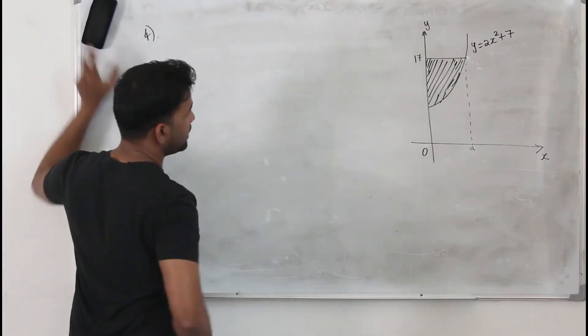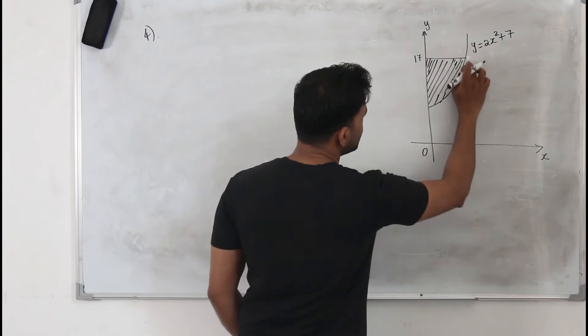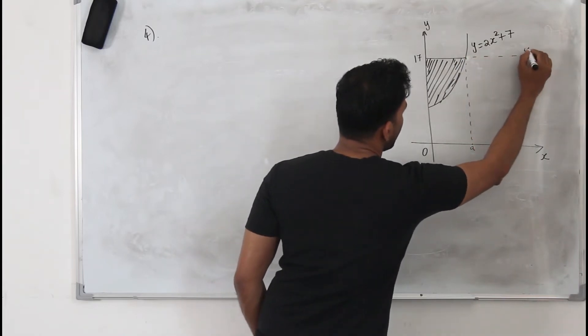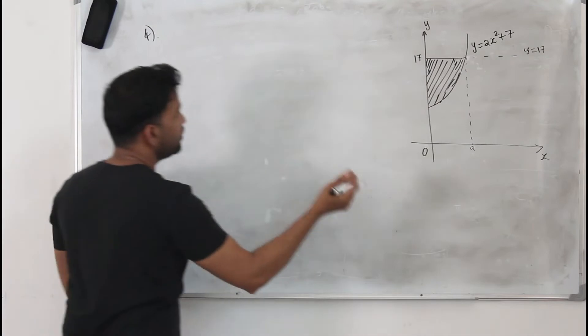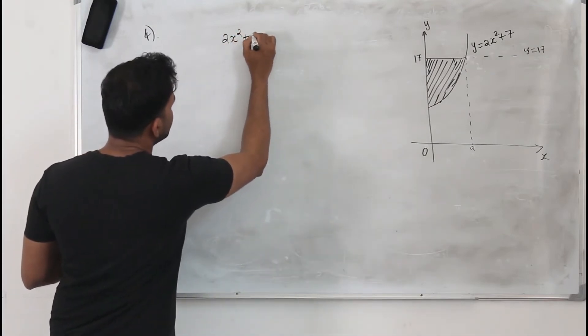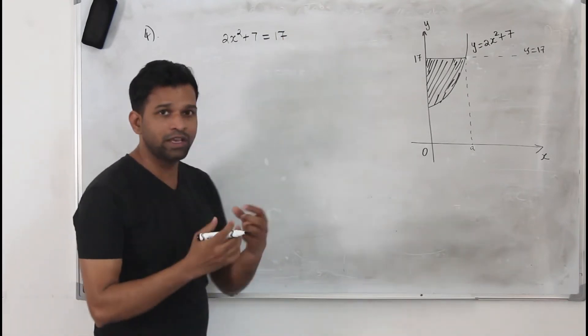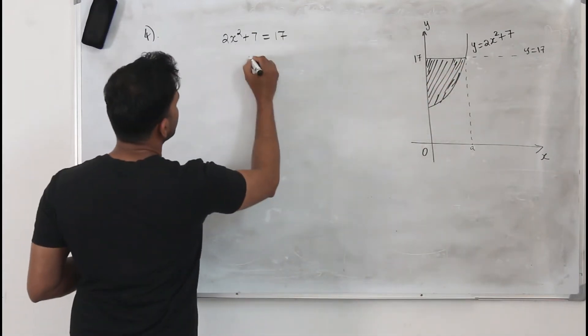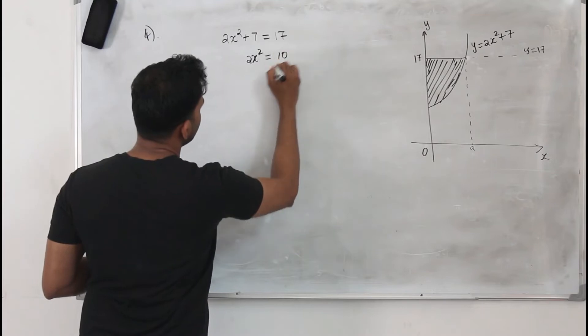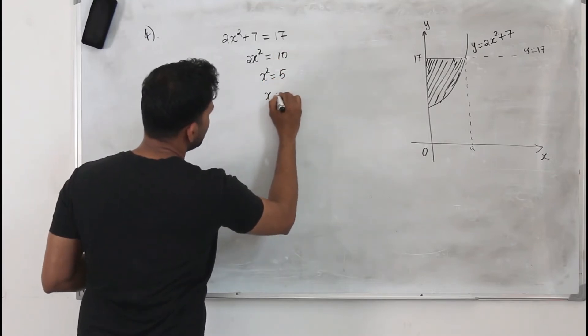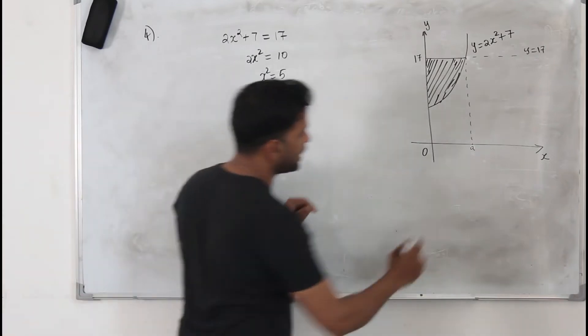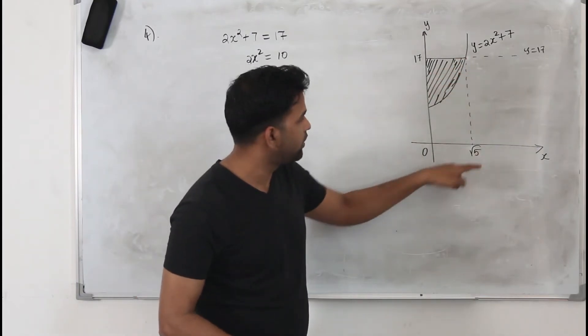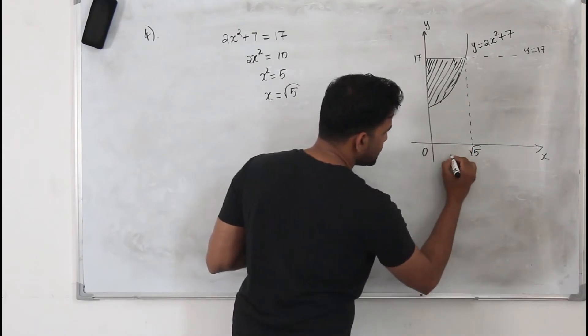How do we find the area of rectangle? You need to know this point, the x-coordinate here. This is the point of intersection of the curve and the line with equation y equals 17. When you equate them both, 2x squared plus 7 equals 17. So your 2x squared is 10, x squared is 5, x will be square root of 5. It cannot be negative, it is positive. The x-coordinate of this point is square root of 5, so this breadth is square root of 5.